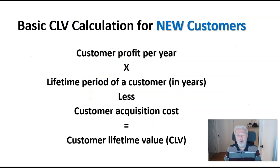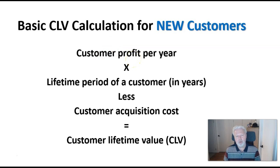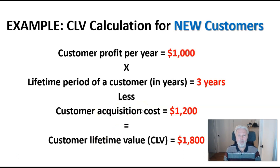We're going to look at new customers, so we'll include an acquisition cost. This is the ballpark method — we simply work out how much profit a customer contributes per year on average, then look at how long they're going to be a customer for us on average, take off the acquisition cost, and we work out our lifetime value.